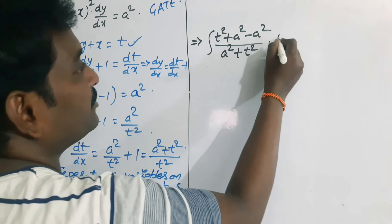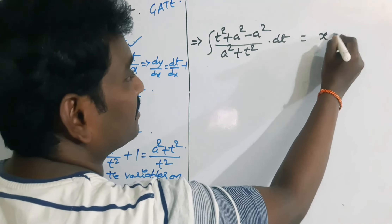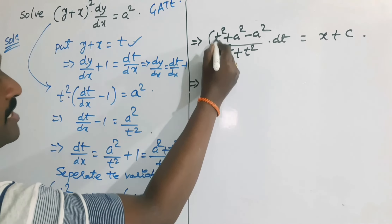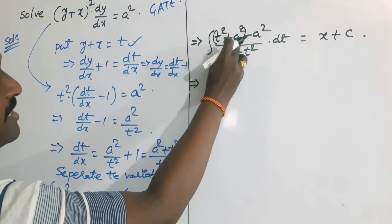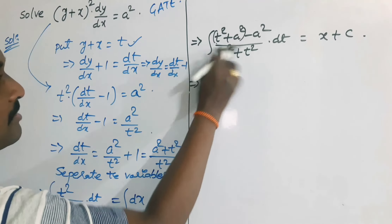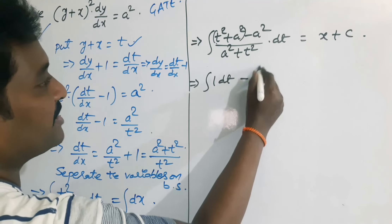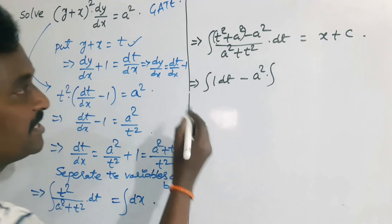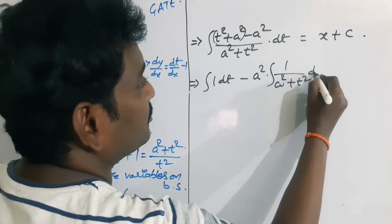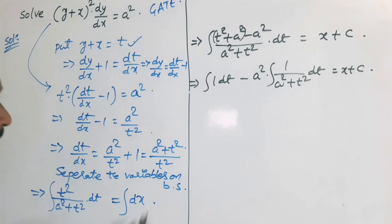So the integral becomes ∫(t² + a² − a²)/(a² + t²) dt = ∫1 dx = x + c. Separating the terms: since (t² + a²)/(a² + t²) = 1, we get ∫1 dt − a²∫1/(a² + t²) dt = x + c.